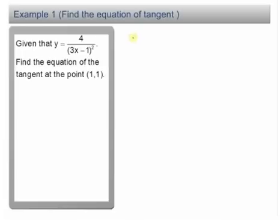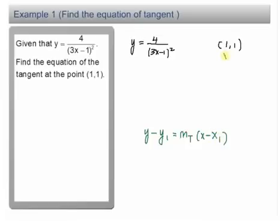We have the equation y equals 4 over 3x minus 1 squared. We have to find equation of tangent at point (1,1). So equation of tangent, remember, for equation of tangent, you have y minus y1 equals m tangent times x minus x1. So you already have x1, y1 here.